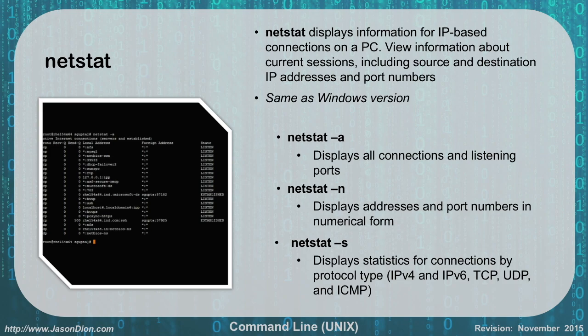NetStat displays information for IP connections on a PC, just like in Windows. We have the same commands as before: -a for all connections, -n to display port numbers in numerical form, and -s for statistics. There's no difference here between Unix and Windows, which makes it easy to go from one to the other.